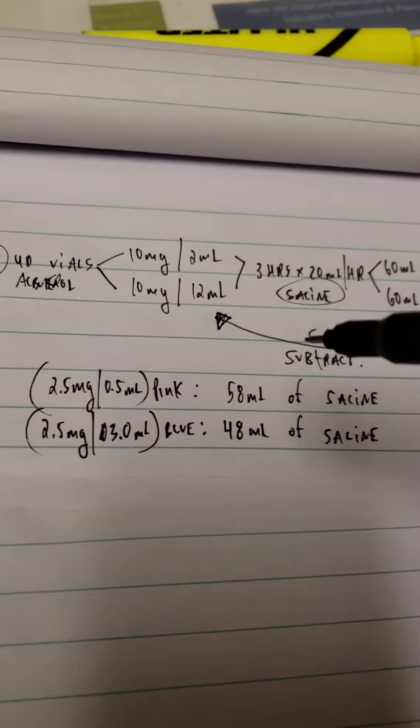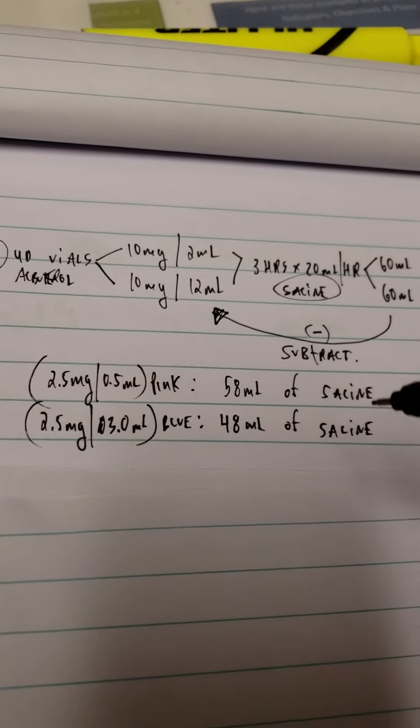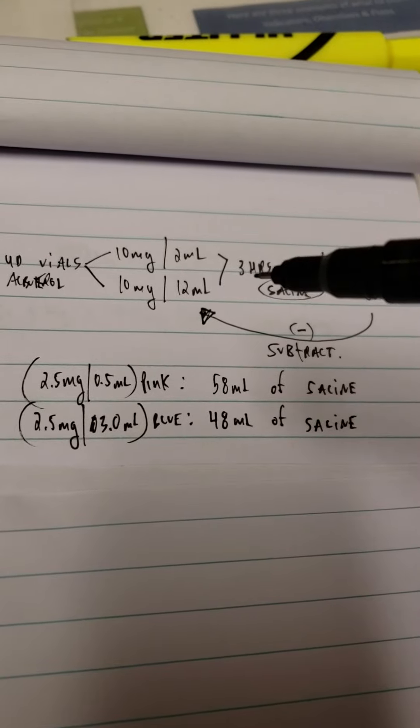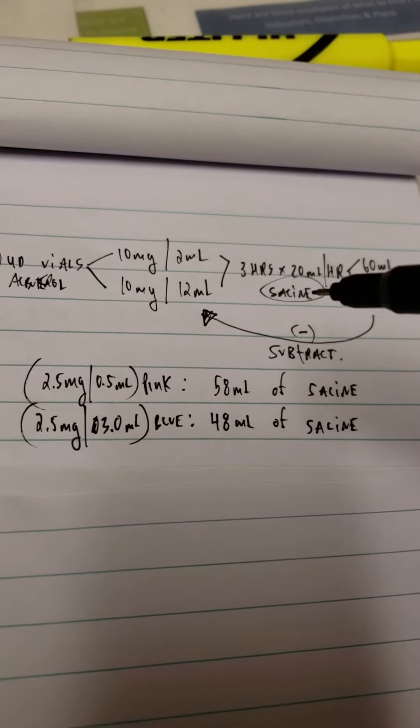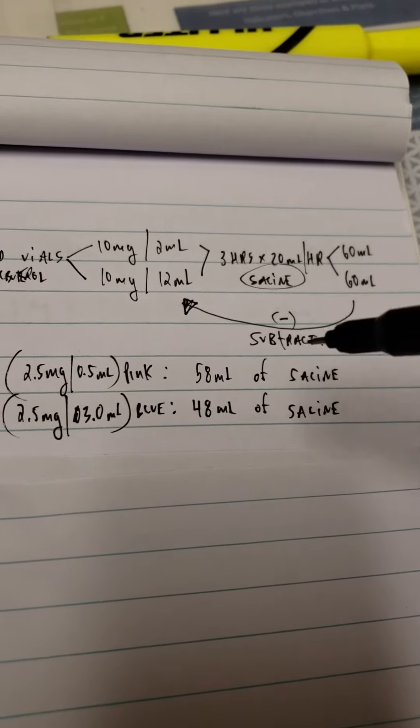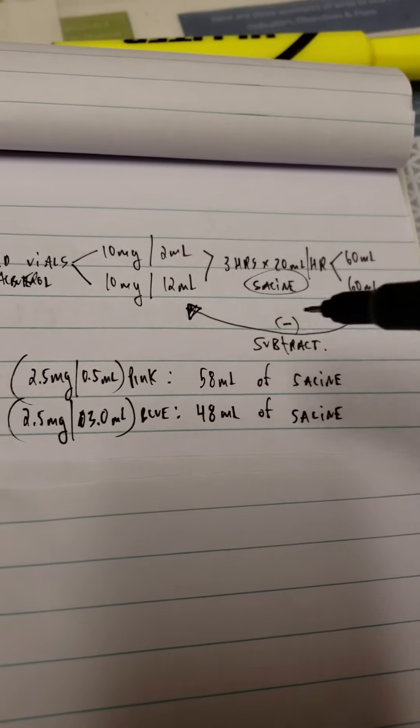saline would you have to add to achieve three hours using an output of 20 ml's? So there it is: three hours times 20 ml's per hour is 60 ml's. If I take that and subtract it, so I'm taking...